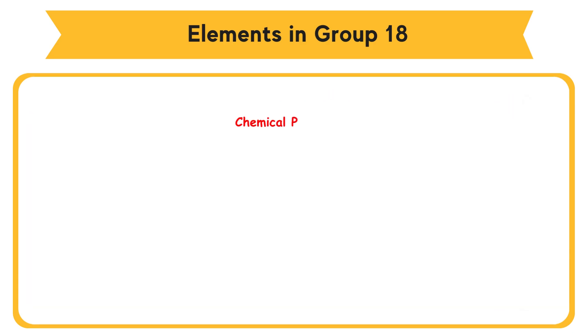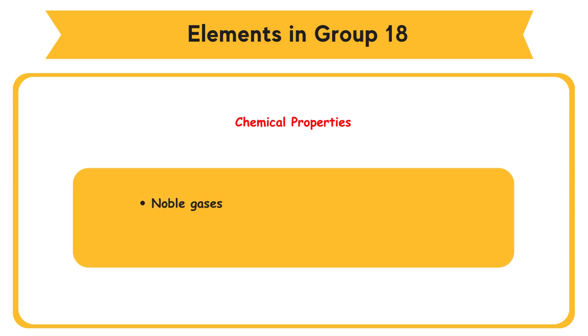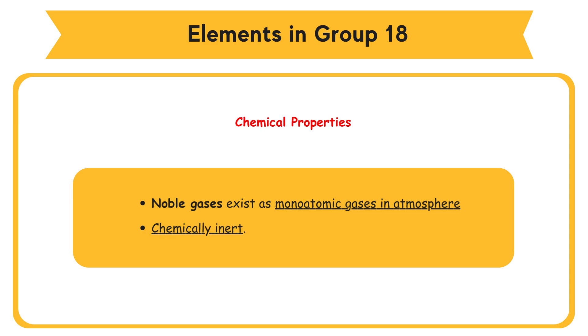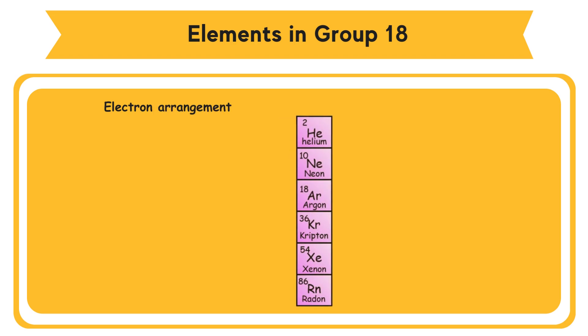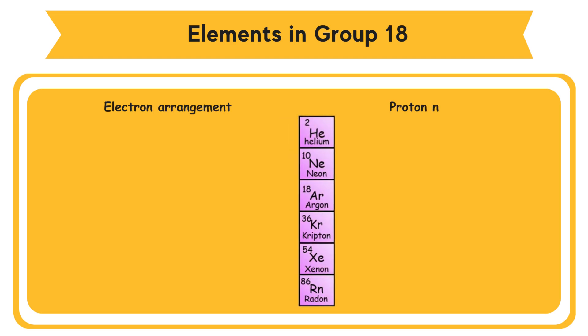Chemical properties: noble gases exist as monoatomic gases in the atmosphere, and they are chemically inert.